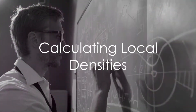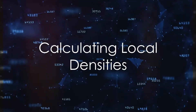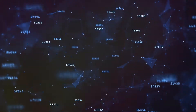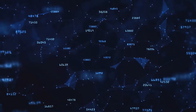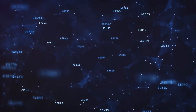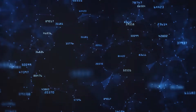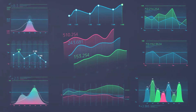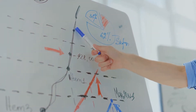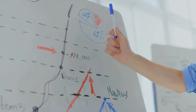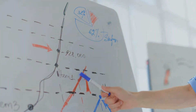But how does LOF calculate these densities? It uses the concept of K-distance — the distance between a data point and its K-th nearest neighbor, where K is a user-defined parameter. The average of the distances of a data point to its K nearest neighbors is a measure of its local density. LOF then compares this local density with the densities of its neighbors. If a data point's local density is significantly lower than its neighbors, it's a local outlier.